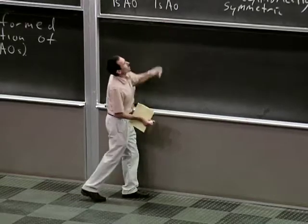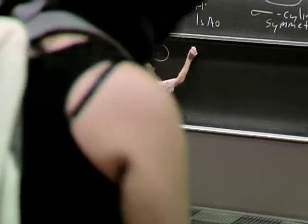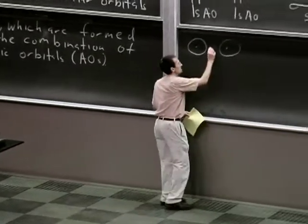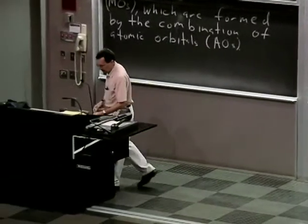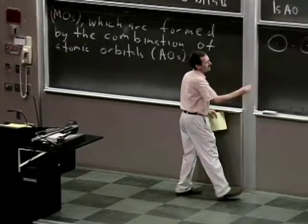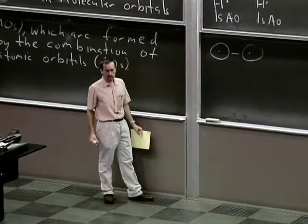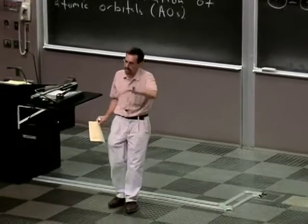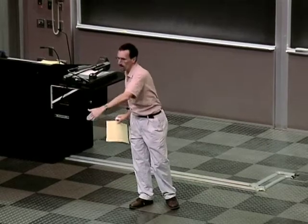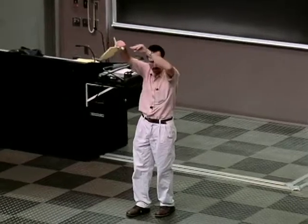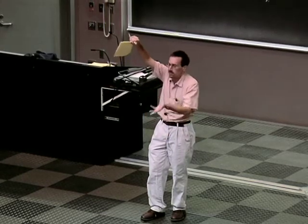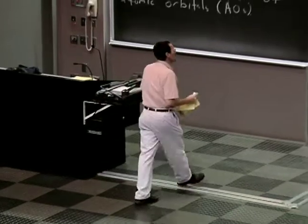Now let's consider combining the orbitals in a subtractive fashion — this is where students usually find the notions a little bit confusing. Here are two 1s atomic orbitals, and we now imagine subtracting one from the other. We can think of adding the negative of this orbital. This is confusing because you have to think about orbitals like waves on the ocean — a wave can go up, a wave can go down. Two wavetops that are up interact with each other; a wavetop that's up and one that's down do not interact.